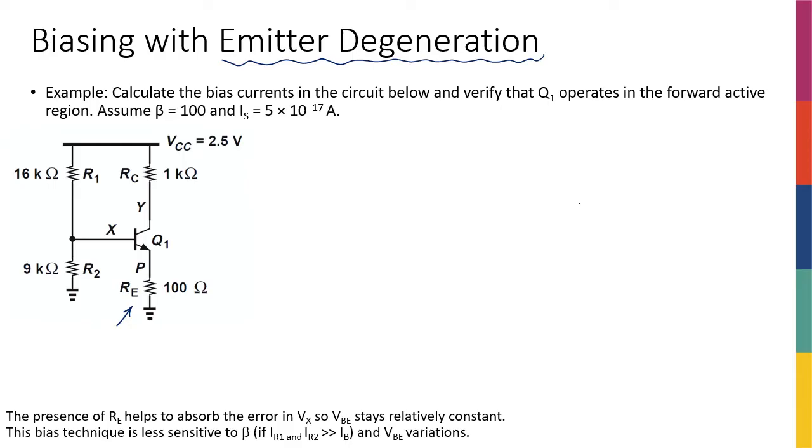The idea is that because of this RE, because of this resistor, the error in the VBE or in the VX because of resistor variations, because of R1 and R2 variations, is going to be absorbed into the voltage across the RE.